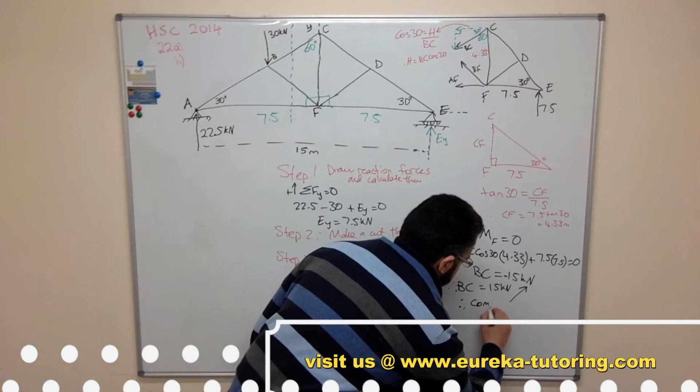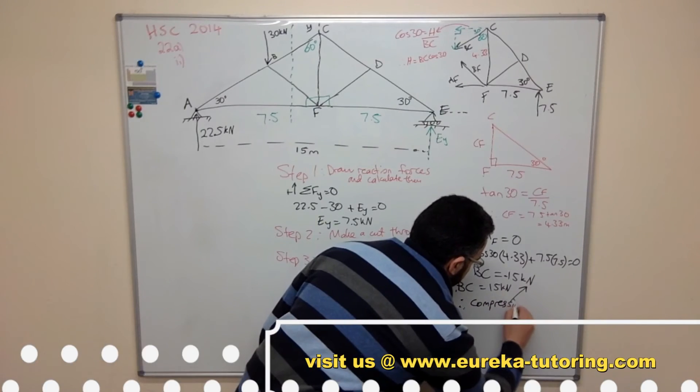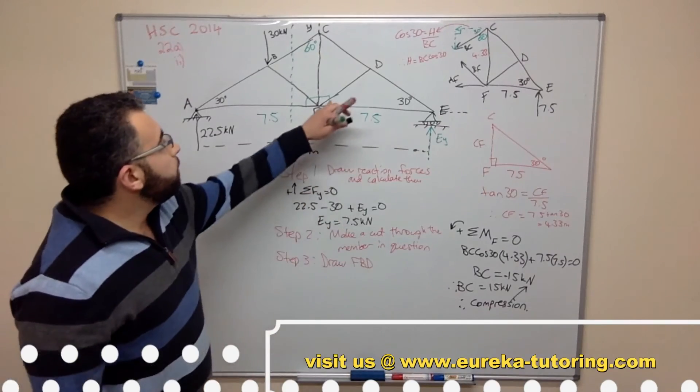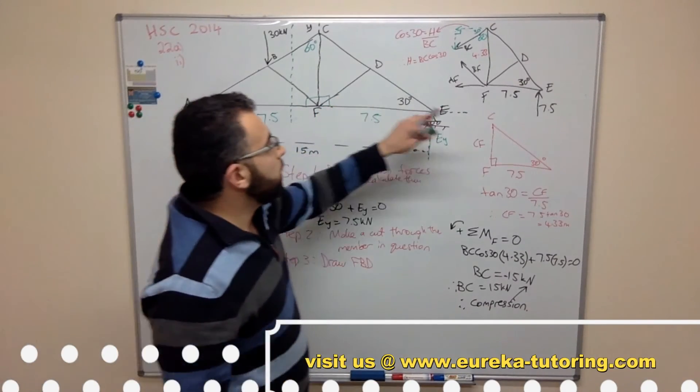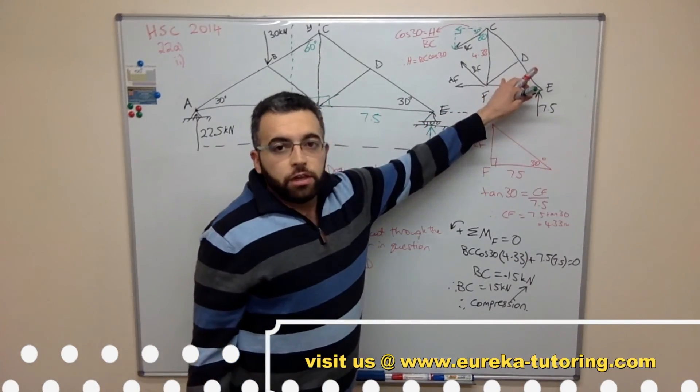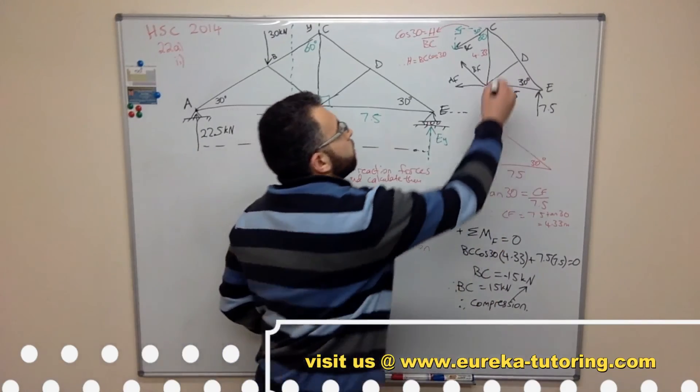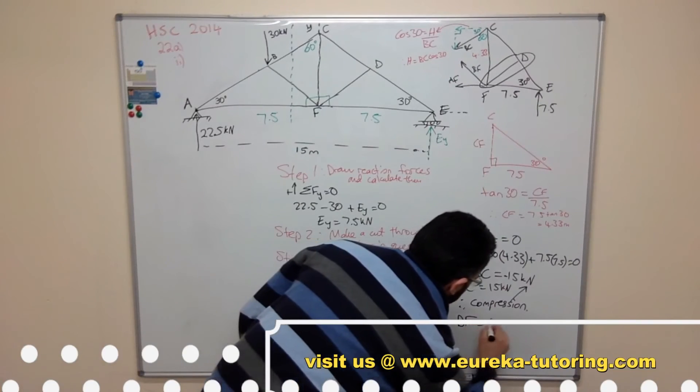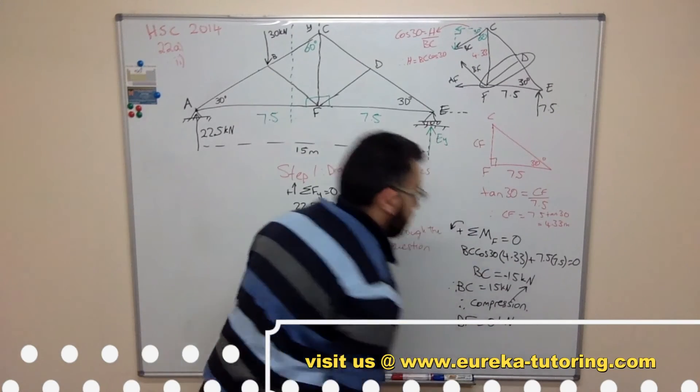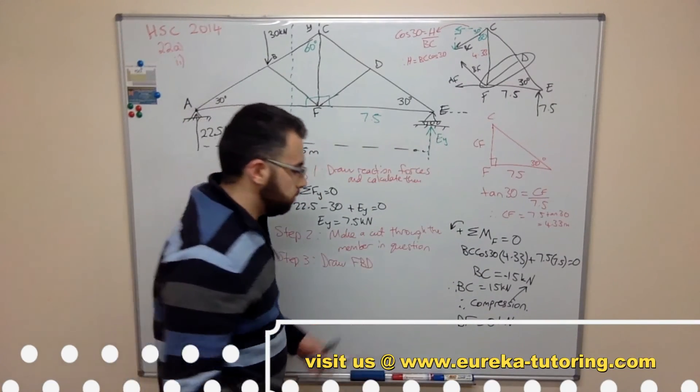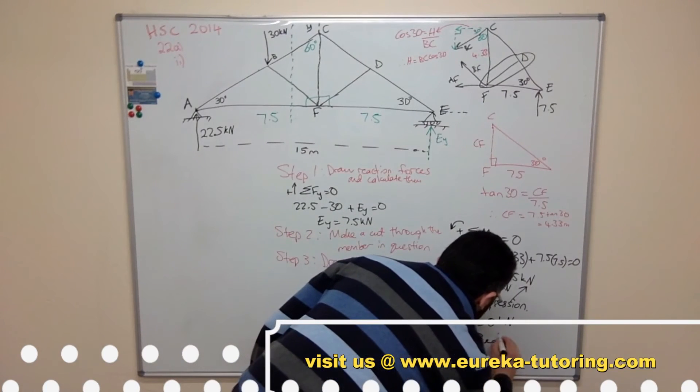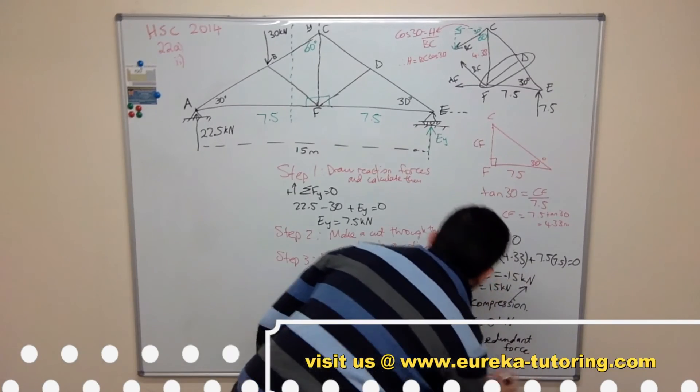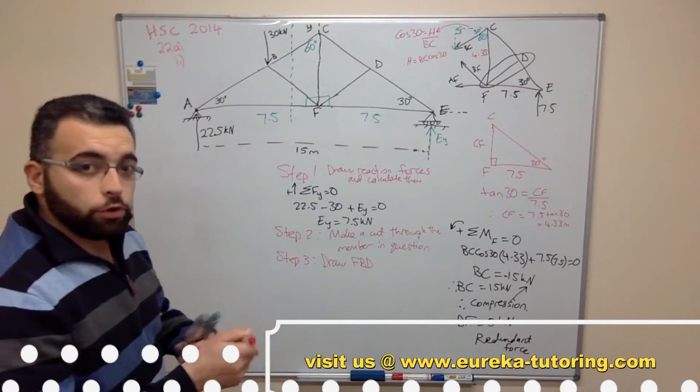Now the next thing they ask us to do is find the force in DF. Remember DF? Now if you look at the member DF, there are no forces. It's just a simple member. So DF equals zero kilonewtons, and the nature of that is redundant - has no impact, redundant force.